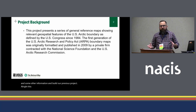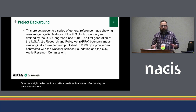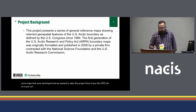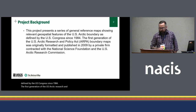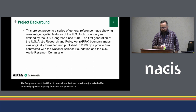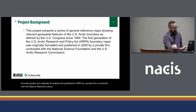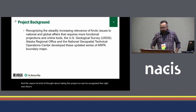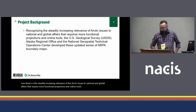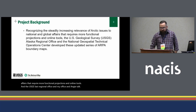This project presents — to give you some background — Dee Williams, my counterpart in Alaska, noticed that there was an office that had some maps that were developed, and we wanted to take this project, kind of put the USGS spin on it, put our cartographic standards on it. So this project was born from that. It's a series of general reference maps showing relevant geospatial features of the US Arctic boundary as defined by the US Congress since 1984. The first generation of the US Arctic Research and Policy Act — which we just call ARPA — boundary maps was originally formatted and published in 2009 by a private firm contracted with the National Science Foundation and the US Arctic Research Commission. Dee recognized that there's a steadily increasing relevance of Arctic issues to national and global affairs that require more functional projections and online tools, so the USGS Alaska regional office and my office at NGTOC basically took those three maps and decided to refresh them with more up-to-date information.